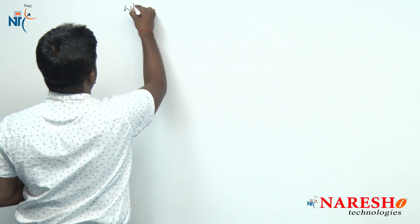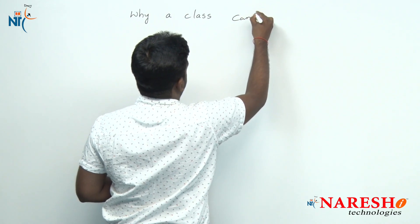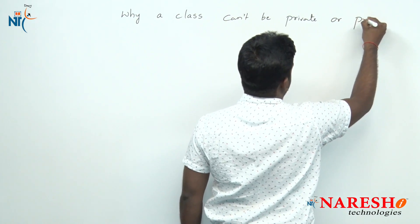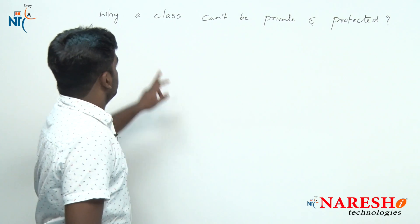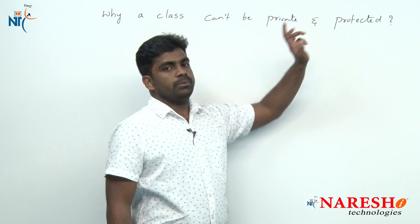Hi everyone, welcome to Nourish Technologies, this is Srinivas. In this session, we are going to discuss one interview question: why we cannot apply access modifiers private and protected to a class? Why a class cannot be private or protected?